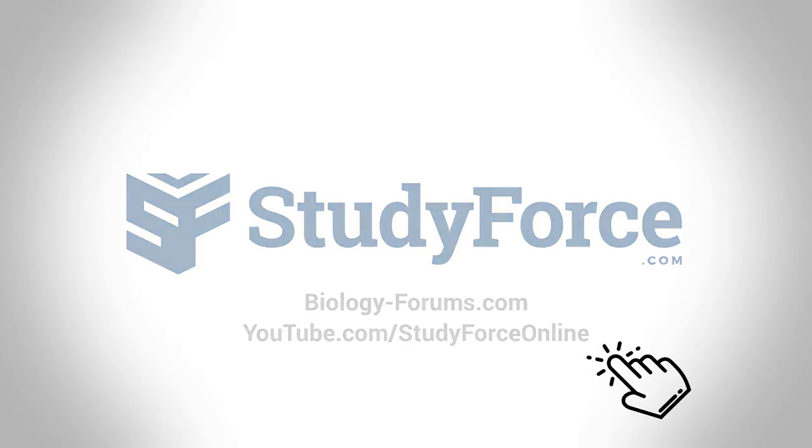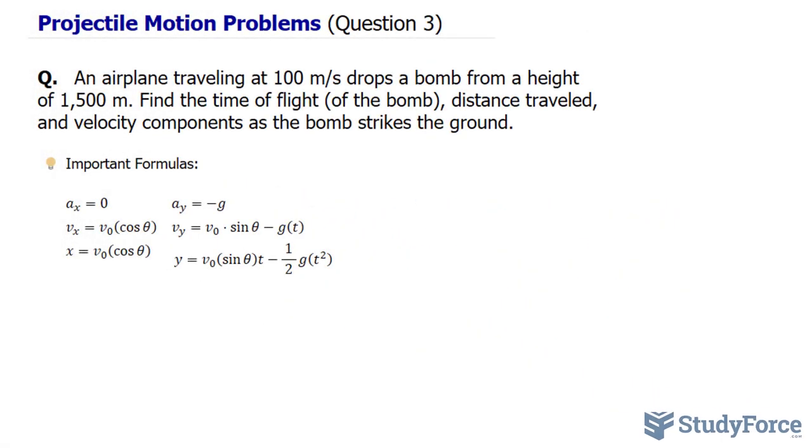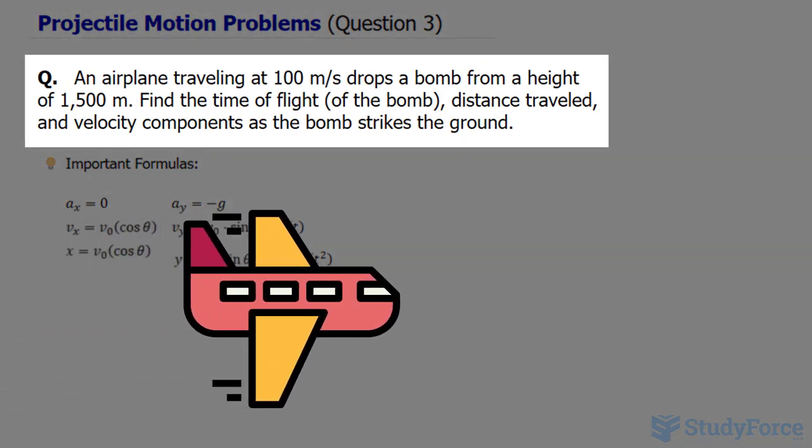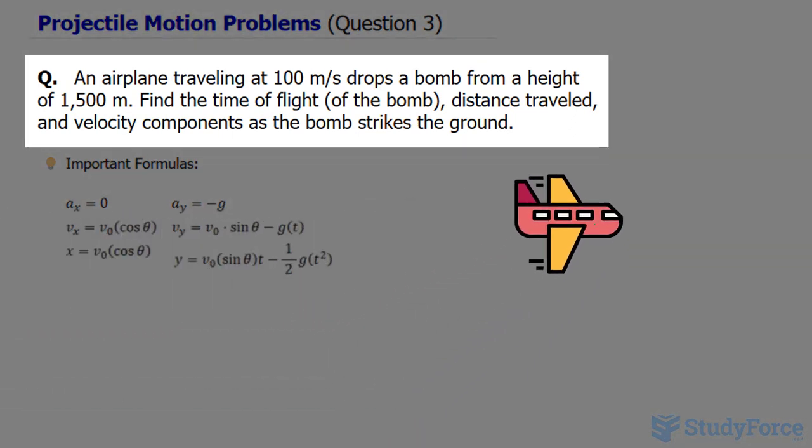Welcome back to question three of our series on projectile motion problems. The question reads: an airplane traveling at 100 meters per second drops a bomb from a height of 1,500 meters. Find the time of flight of the bomb, the distance traveled, and velocity components as the bomb strikes the ground.